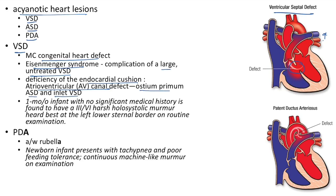Clinical case of VSD: one-month-old infant with no significant past history is found to have a grade 3 harsh holosystolic murmur heard best at the left lower sternal border on routine examination.